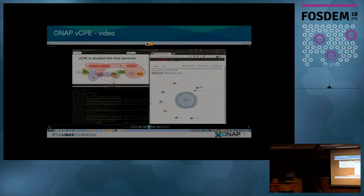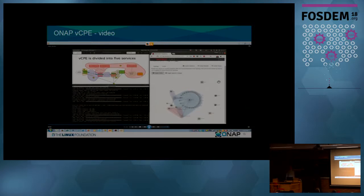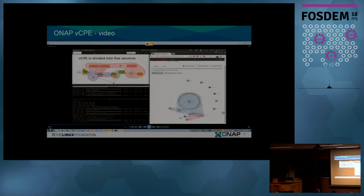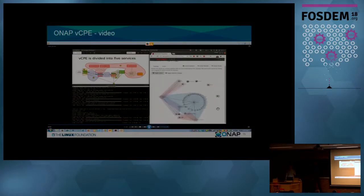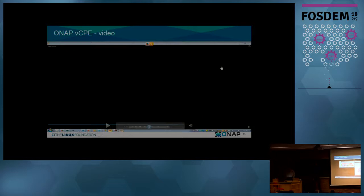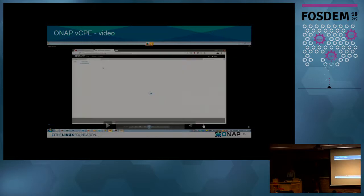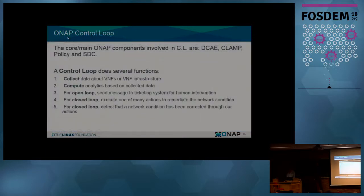Here you will see the actual instantiation. On the top left you have the theory; on the bottom left you have the scripts actually triggering the ONAP API for instantiation; and on the right you have the OpenStack dashboard where you see all the VMs popping up and the networking being established between all the components. You see it's starting to spin up all the VNFs, running a series of tests. And that's it for the instantiation. Now Marshall will talk about the control loop.